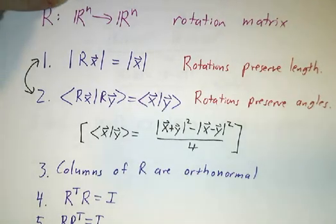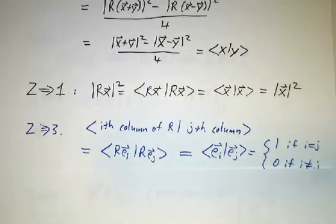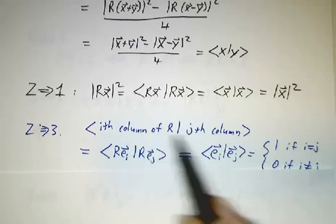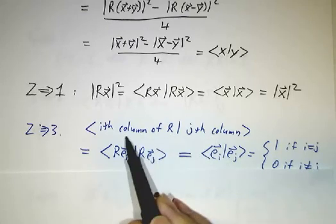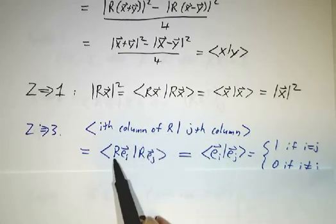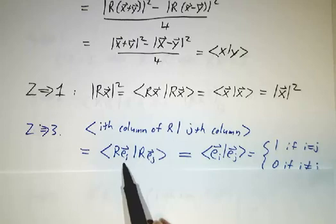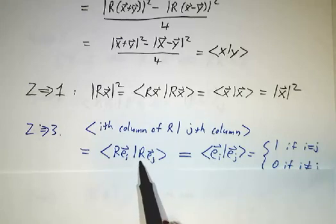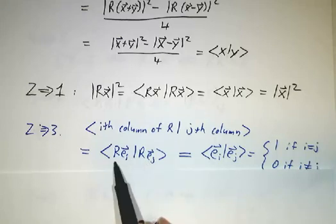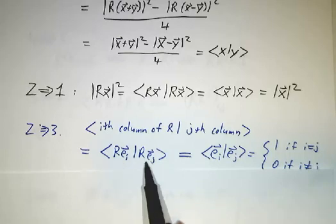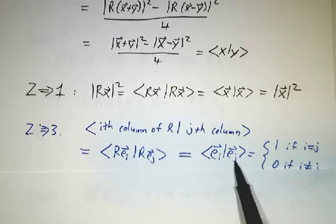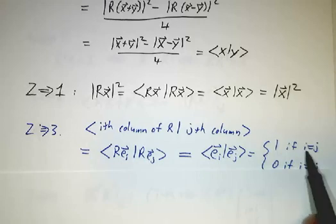Now we want to show the columns are orthonormal. To do that, we ask: what's the inner product of the ith column with the jth column? The ith column of a matrix is what you get when you apply that matrix to e_i, the vector that has 1 in the ith slot and 0 everywhere else. Likewise, the jth column is what you get when you apply R to e_j. If you preserve the inner product, then this is the inner product of e_i with e_j, which is 1 if i equals j and 0 otherwise.